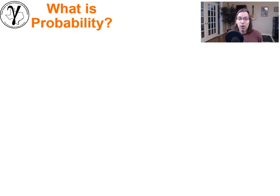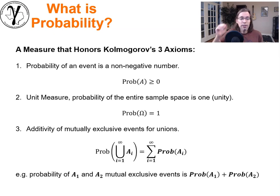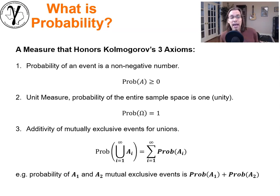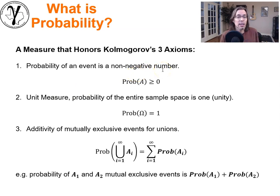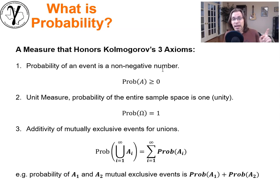Let's get into probability and talk about what it is. We can go back and look at the work of Kolmogorov, who gave us three axioms around probability. He said it's a metric or measure that follows these axioms. First: the probability of an event is a non-negative number — there is no such thing as negative probability. The probability of any event A is greater than or equal to zero.